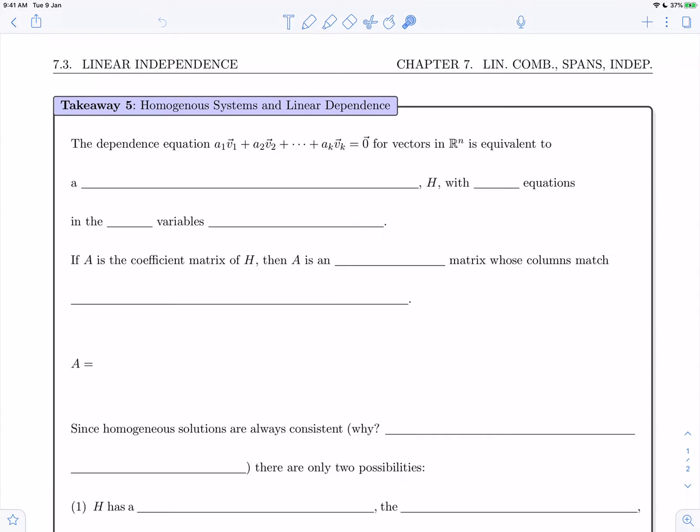Welcome back. In this video we're going to do Takeaway 5, which is about the relationship between homogeneous systems and linear dependence.